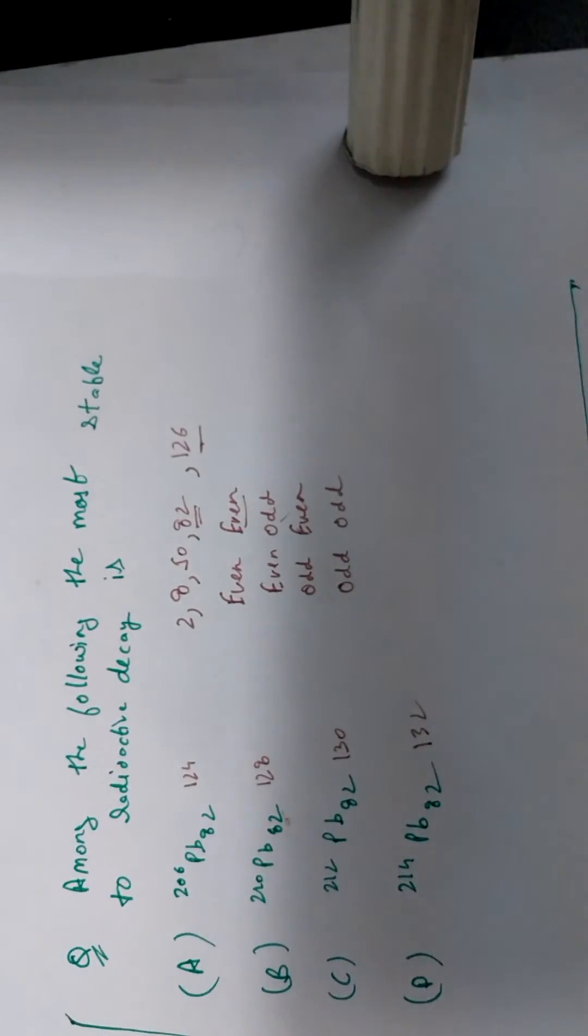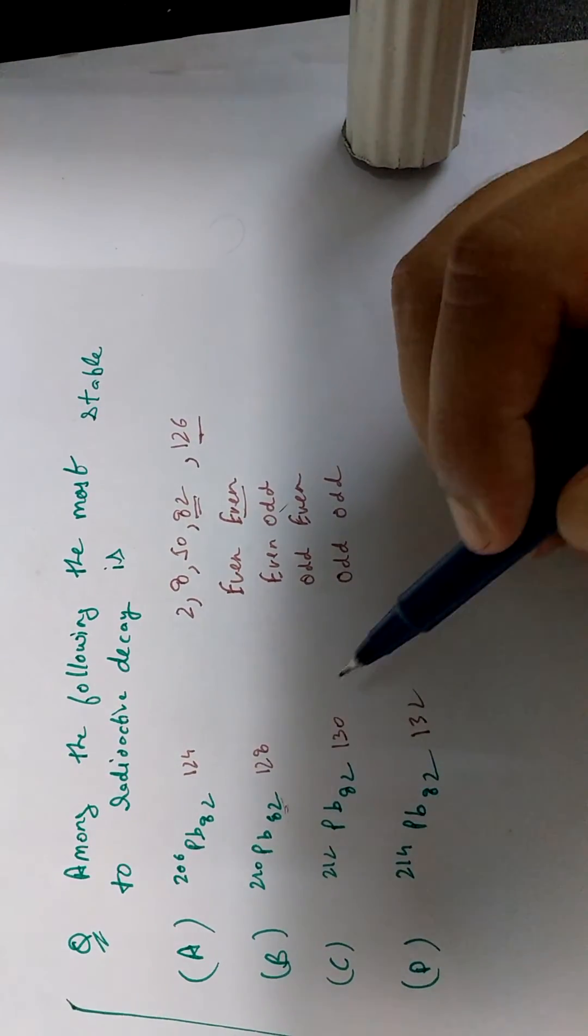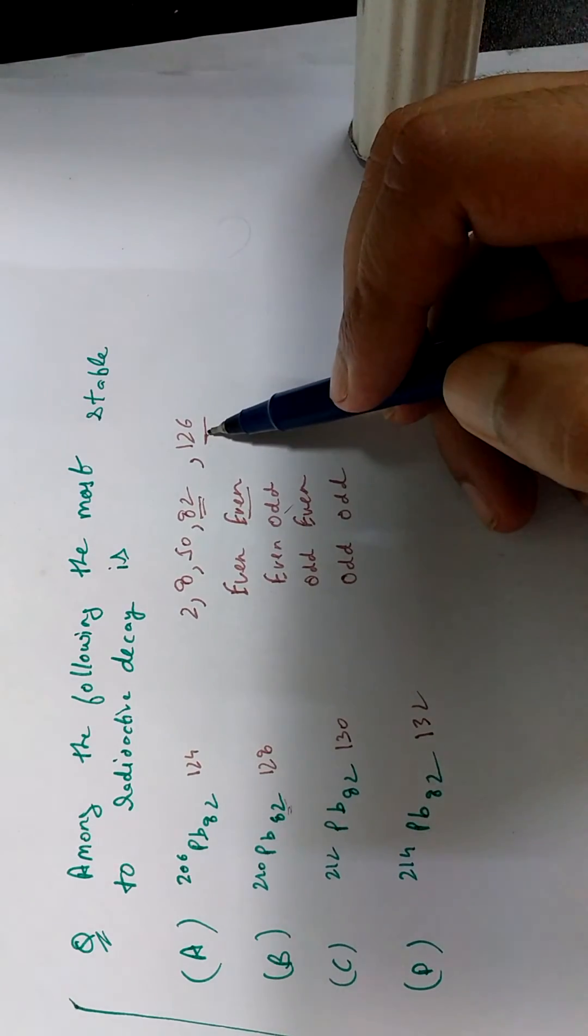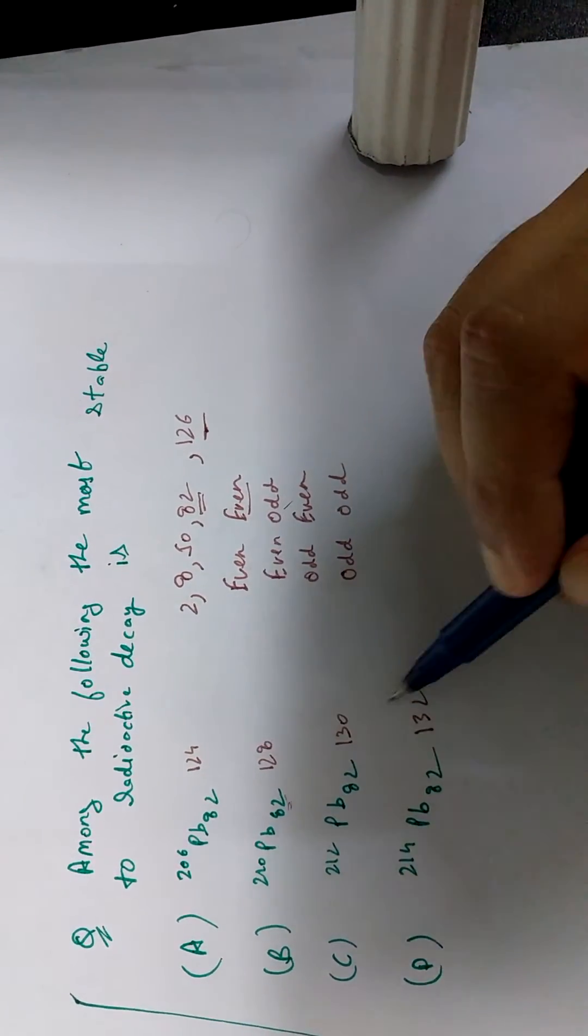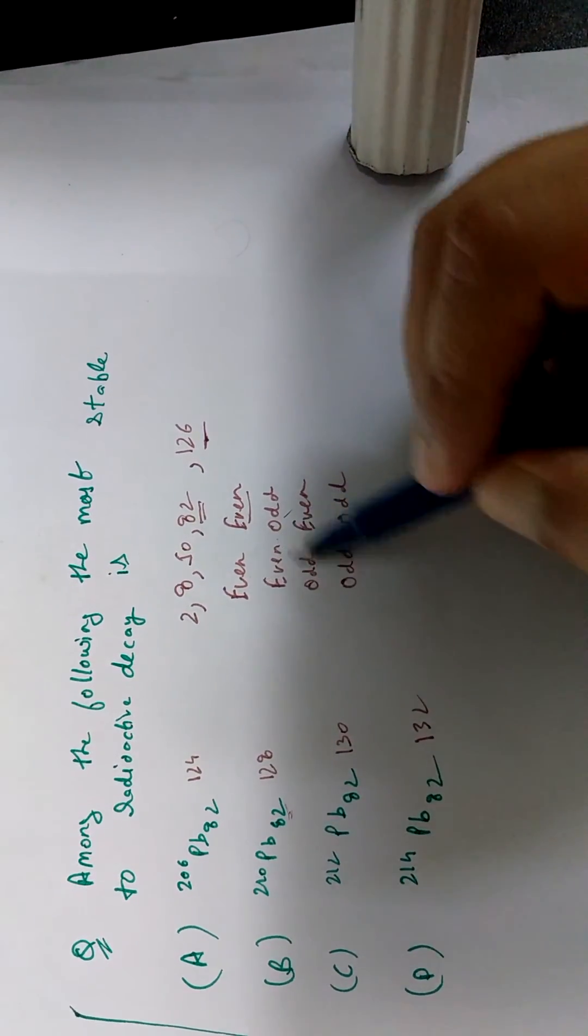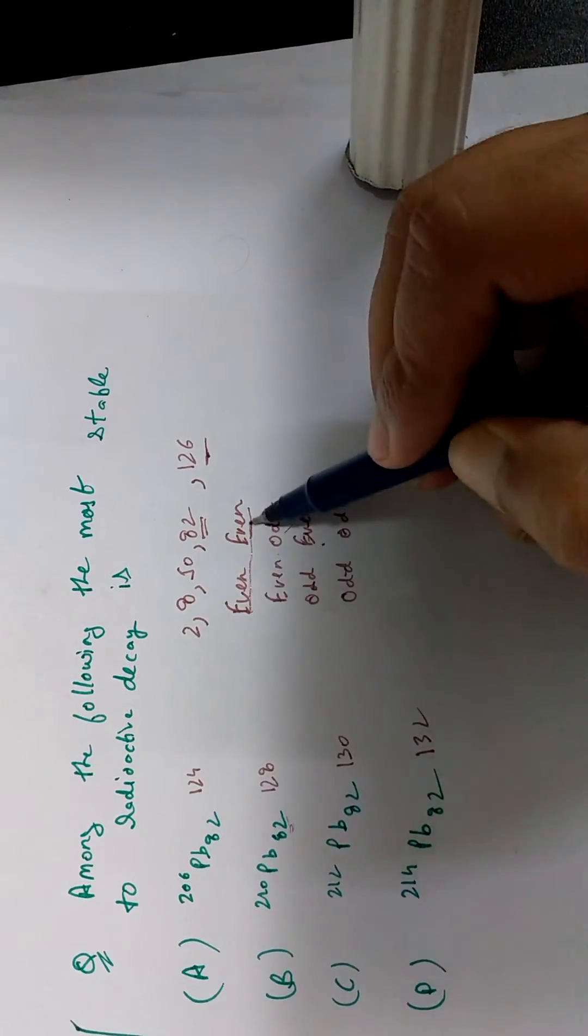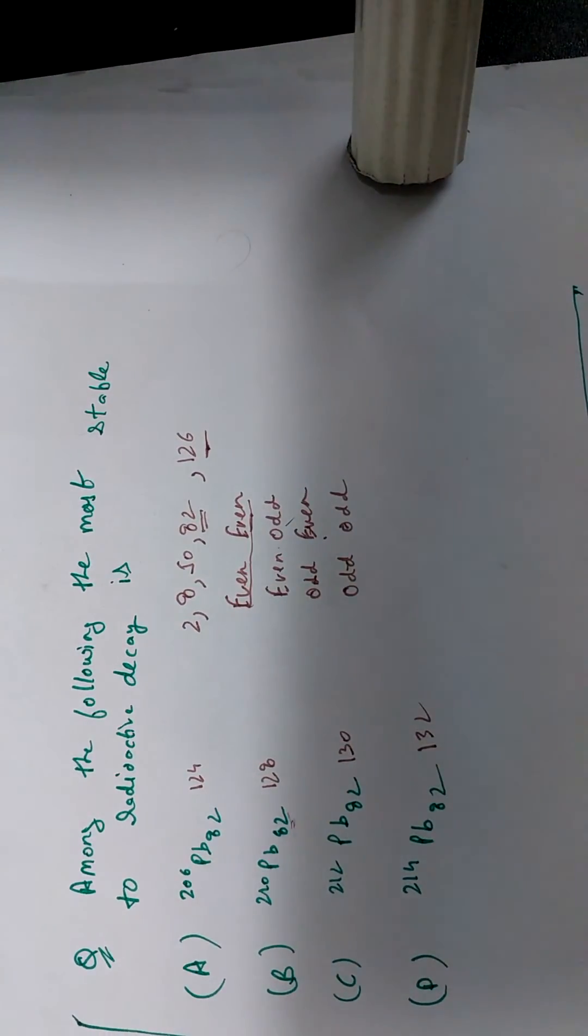So as you can see, 82 is the magic number, which is the number of protons, like I stated, but for the number of neutrons, none of them have the magic number 126. Now we need to look that if there is some element which has even odd or odd even or odd odd, but we can see that all these options, they all have even, even numbers, right? So here also we cannot differentiate between them.